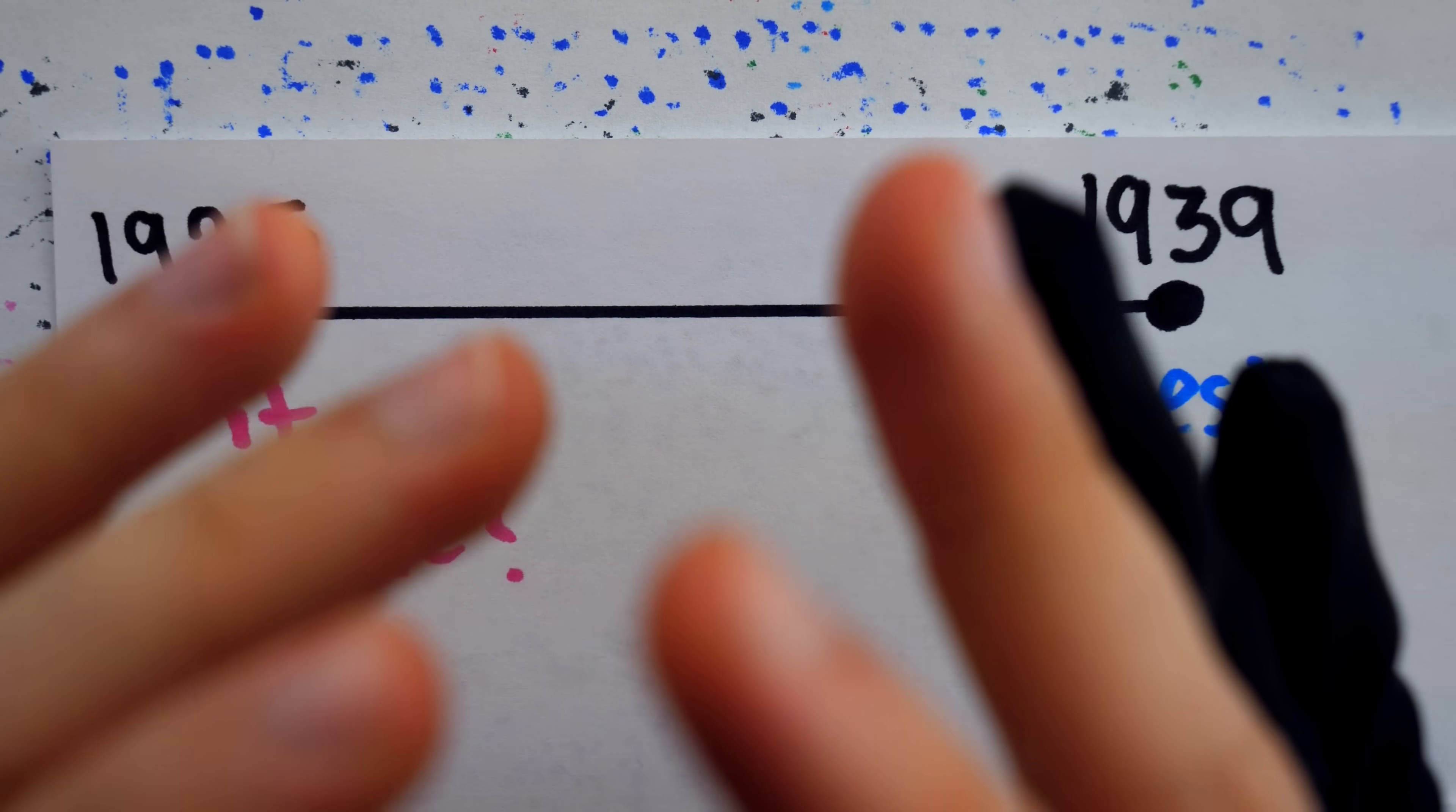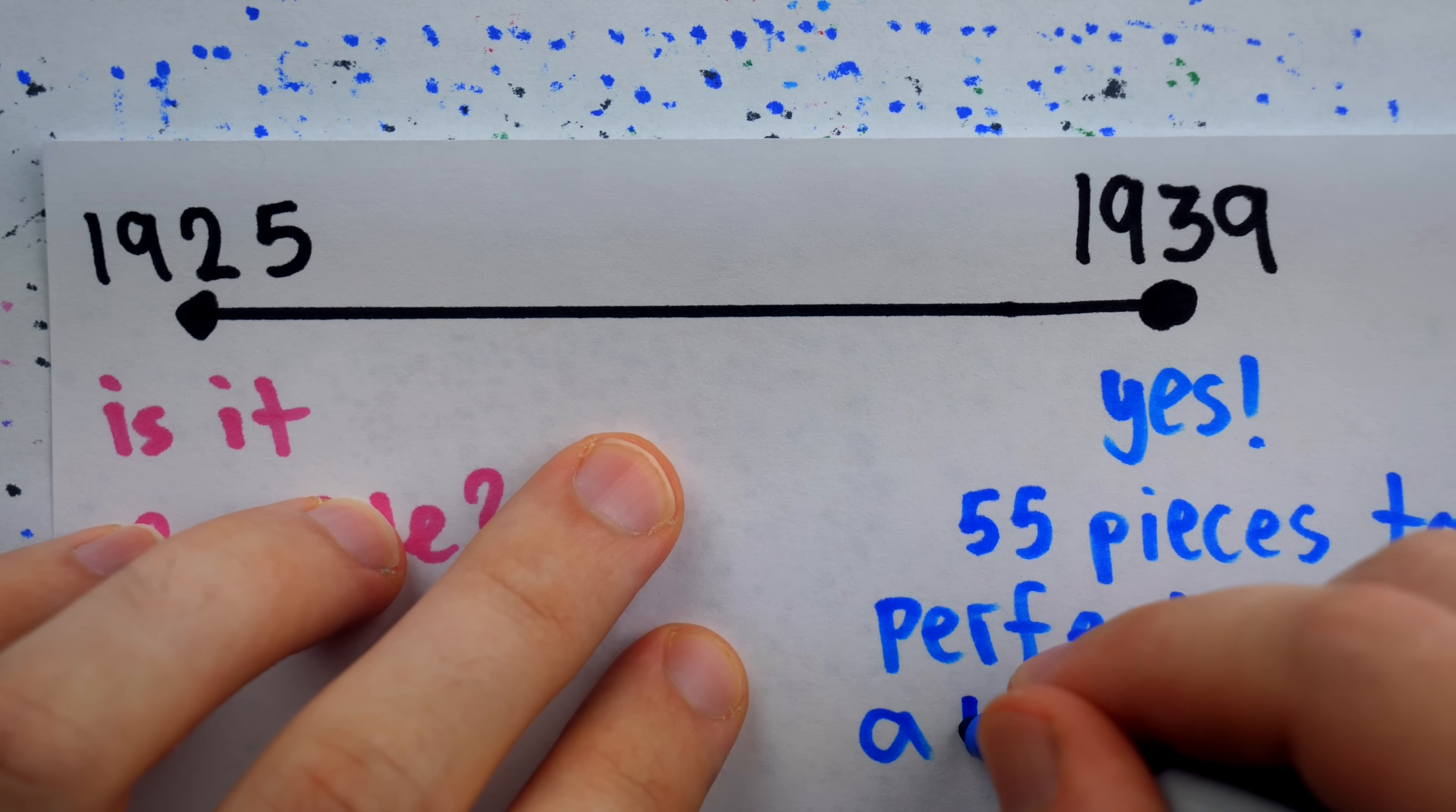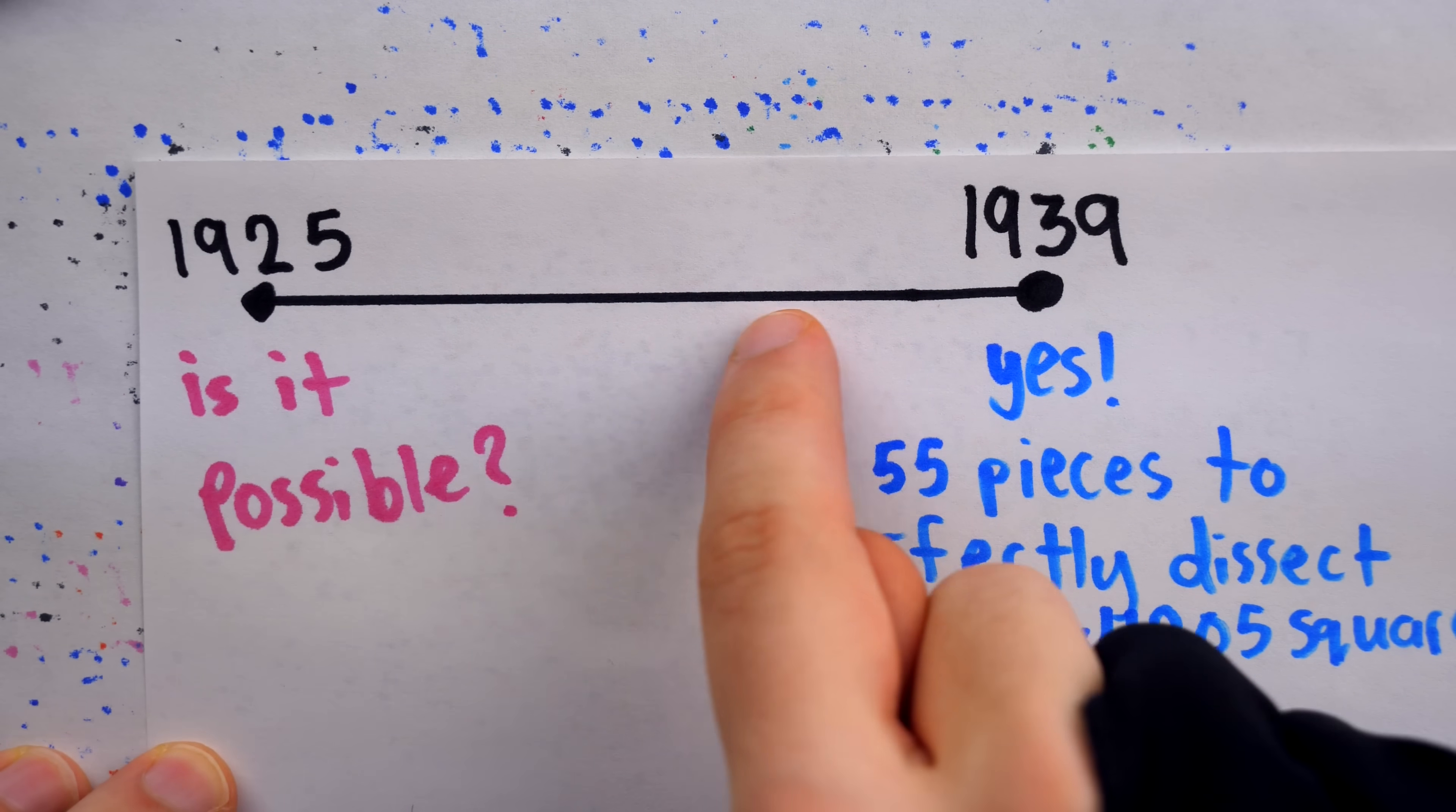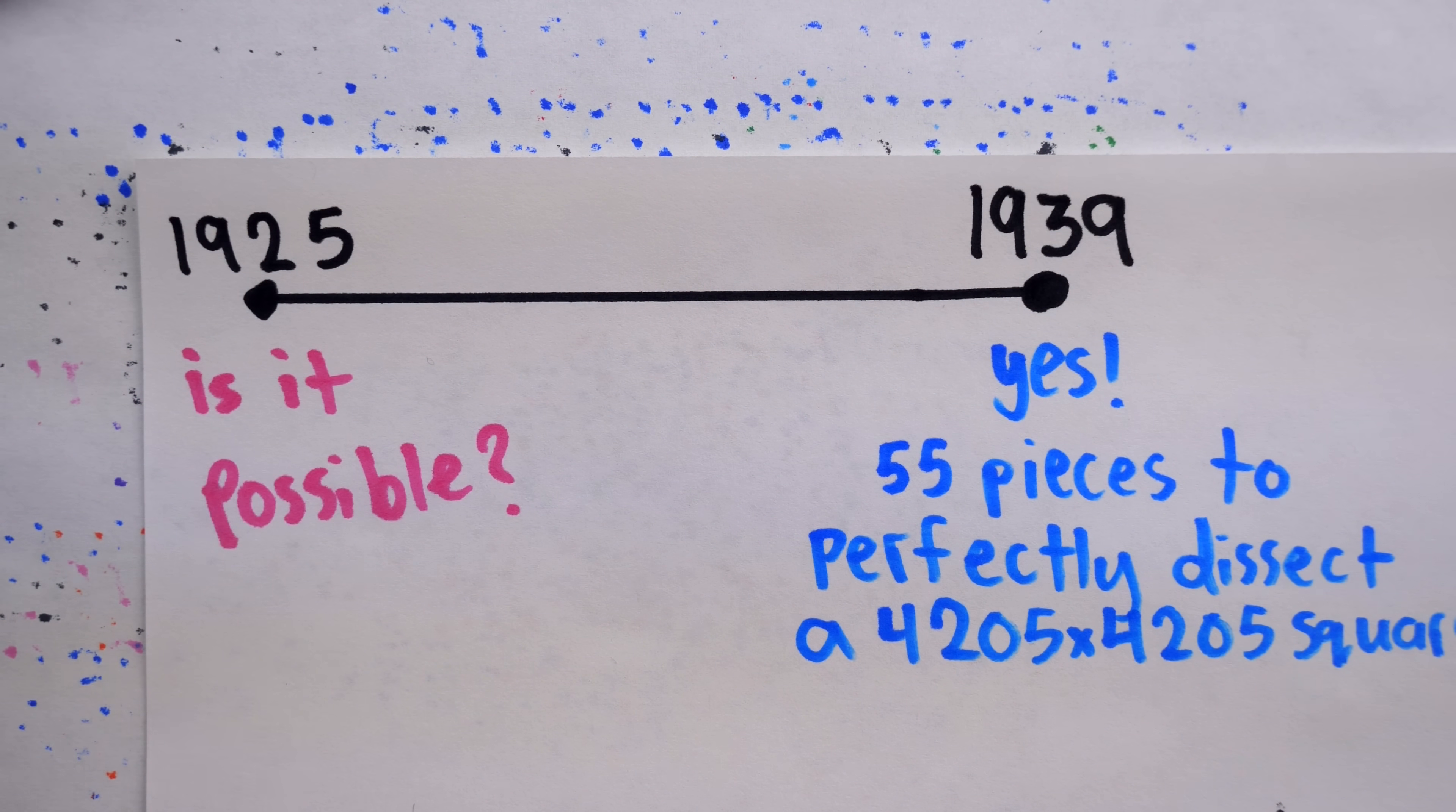You might like to take a moment to guess how many distinct square pieces Sprague needed, and how big the whole square that he dissected was. Turns out, he needed 55 square pieces to perfectly dissect a gigantic 4205x4205 square. Later though, Moron claimed that he had actually found Sprague's perfect dissection solution 10 years earlier, somewhere in this time span, but had failed to publish it. There's no proof to this claim, other than his word, but he did have significant findings on this subject, so it's certainly possible.